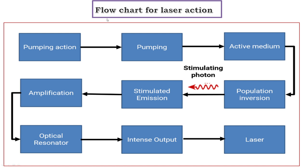The flowchart representing laser action: pumping action moves ground state atoms to the excited state. The active medium undergoes recombination of electrons and holes, or excitation of electrons and photons. Population inversion is achieved where N2 > N1, leading to stimulated emission. Laser beams are produced and amplified using the optical resonator with a partial reflecting mirror, generating intense output light beams — these are called laser.